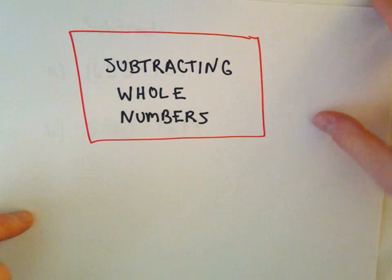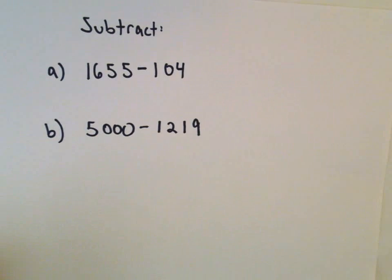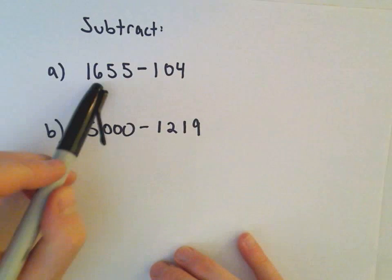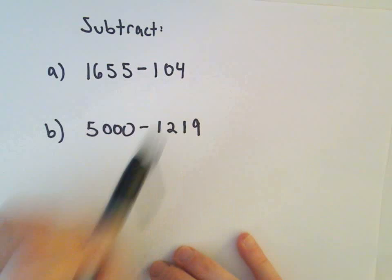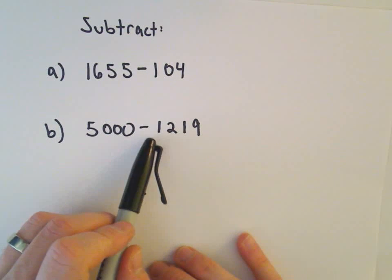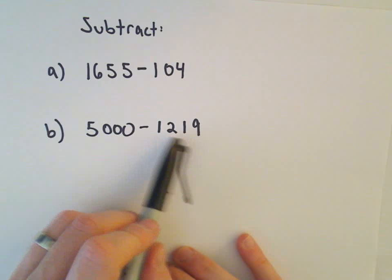All right, another couple examples here of subtracting whole numbers. So in part A, we have 1,655 minus 104. Part B, we've got 5,000 minus 1,219.